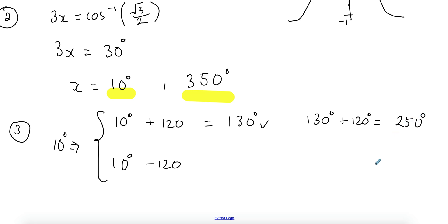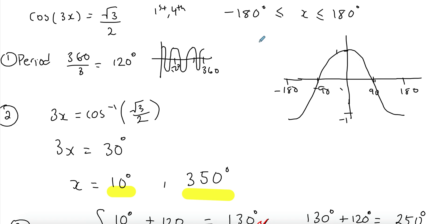And 250 is already outside of our domain, so not a solution. So this is a solution, and this is not a solution. And then I have 10 degrees minus that, we need to go to a negative. So I have a negative 110. And that is within the domain of negative 180.